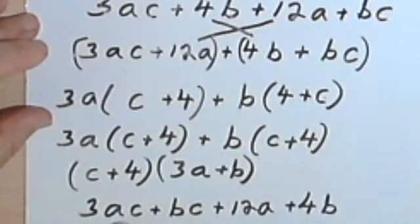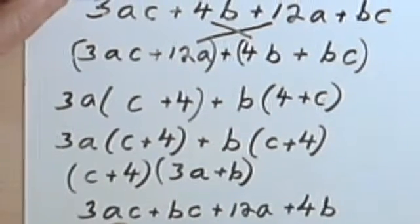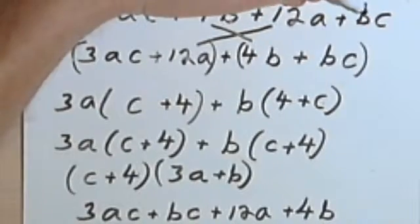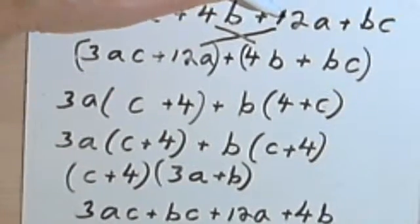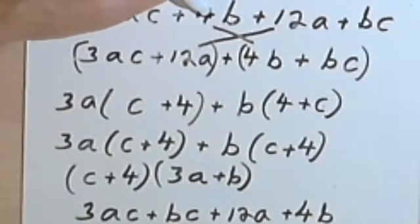Let's check and see if that's where I started. So I've got 3ac and 3ac, bc, here's a bc over here, 12a and 12a, 4b and 4b.